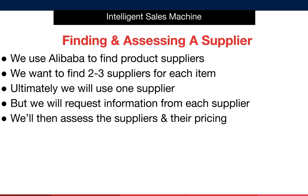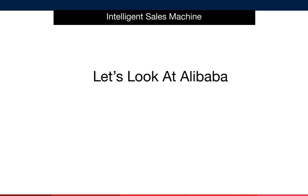When we're finding suppliers, we almost always use Alibaba. This is where you'll start too. Over time, you may work with sourcing agents and people like that, but for now Alibaba is absolutely perfect. When we're looking for suppliers, we want to find two to three suppliers for each item, because suppliers vary in product and supplier quality. The last thing you want to do is work with a supplier who's difficult and doesn't make life easy for you. Ultimately we will use one supplier, but we will request information from each supplier to get a feel for their pricing and their terms. We'll then take all that information, assess the supplier further, and then make a decision as to who we're going to work with. So we're going to jump over to Alibaba now and show you step-by-step how we find and assess these suppliers.